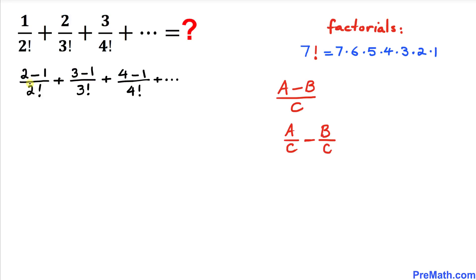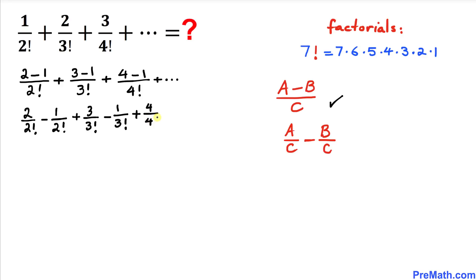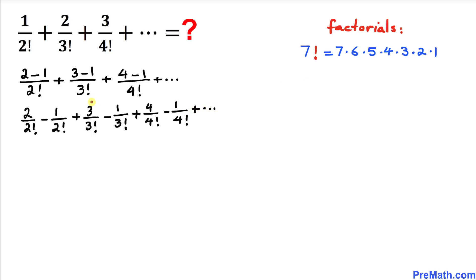Now let's split each fraction into two fractions using this rule. So this gives us: 2 divided by 2 factorial minus 1 divided by 2 factorial, plus 3 divided by 3 factorial minus 1 over 3 factorial, plus 4 divided by 4 factorial, and so on. Let's now focus on the fractions 3 divided by 3 factorial and 4 divided by 4 factorial.